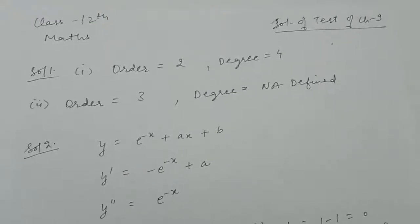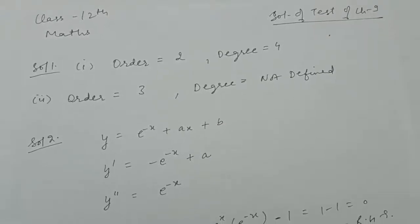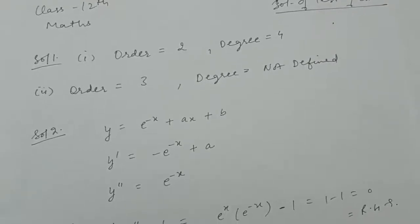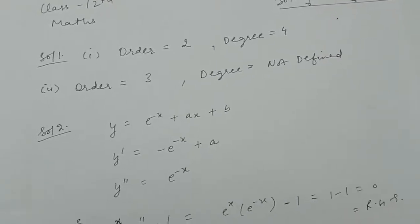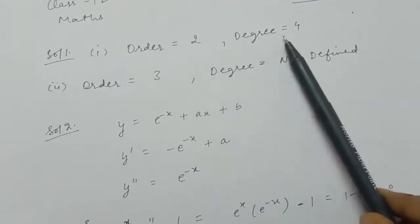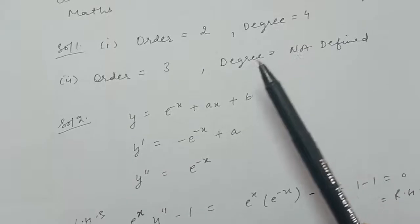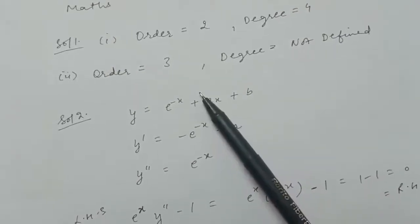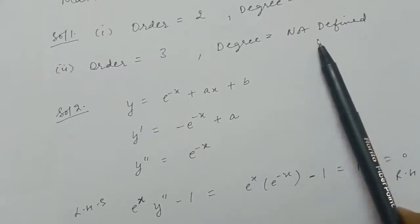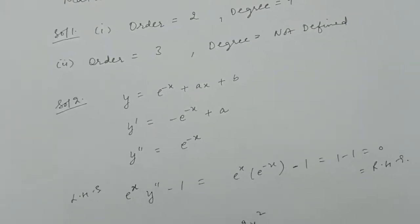Good morning students, this is class 12th maths solutions of chapter 9. Question one: find order and degree of the differential equation. In the first part, the highest order derivative present is 2, so order is 2, and because this is a polynomial equation, its degree will be 4. In the second part, order is 3 and degree is not defined because the differential equation is not a polynomial equation in terms of derivatives.